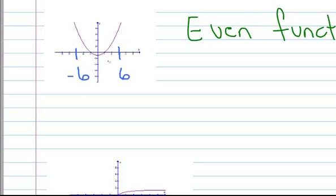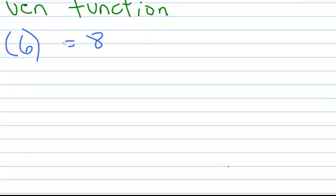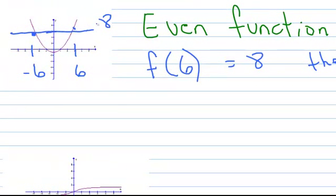So to be an even function, this means if I put 6 into the function, let's just say we get out 8. Then, to be an even function, if I put in the opposite of 6, which you know is negative 6, I should also get out 8. Let's see if that happens. I put in negative 6, and up there I get 8.